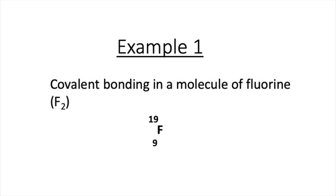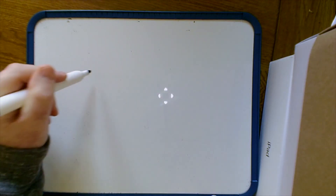We're now going to look at covalent bonding with examples using dot and cross diagrams to illustrate the bonding taking place. In our first example we're going to look at the covalent bonding in a molecule of fluorine, F2. Fluorine is atomic number nine, mass number 19, which means it has nine electrons and its electron arrangement is two in the first shell and seven in the next. Now let's draw a covalent bonding diagram for fluorine F2.